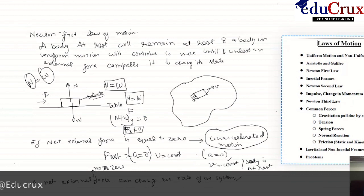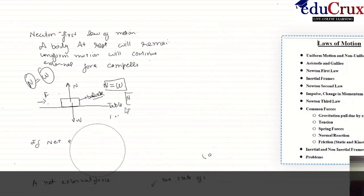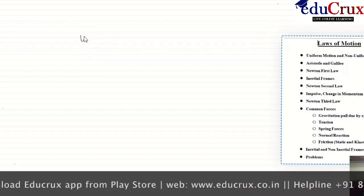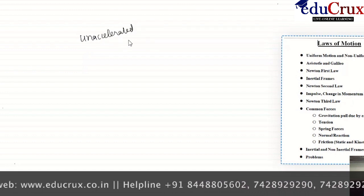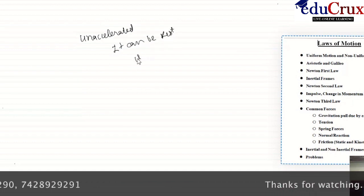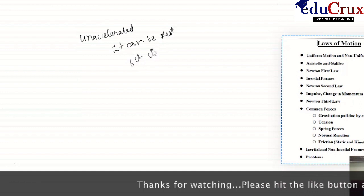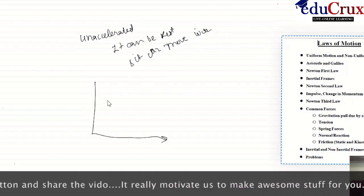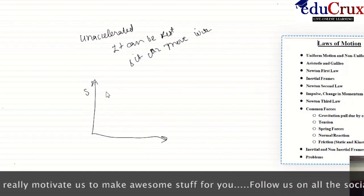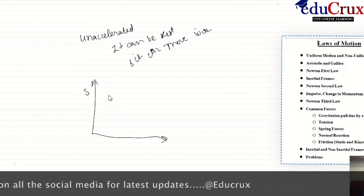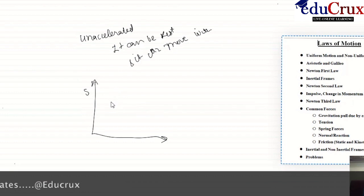Let us now discuss inertial frame of reference. Inertial frames of reference are frames introduced by Newton to study the motion of bodies. The special thing about this frame of reference is that it is unaccelerated — it can be at rest or it can move with a uniform velocity. Consider a frame S: this frame of reference can be inertial only if it is at rest or moves with a fixed velocity V for the overall period of the motion.